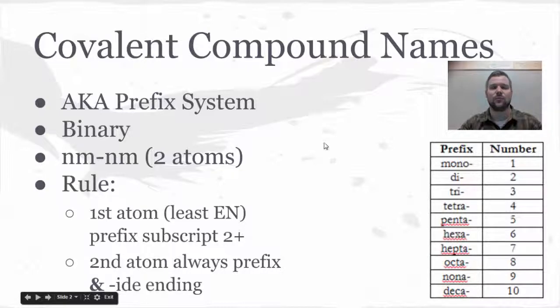These are really simple. Here's your rule. The first atom, which is going to be the least electronegative, which means it's going to be of the two atoms the further one away from fluorine, will get a prefix only if the subscript is two or higher. So in other words, it will not receive a prefix of mono.